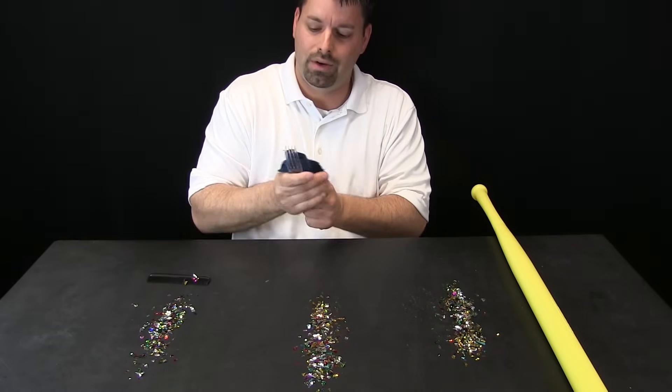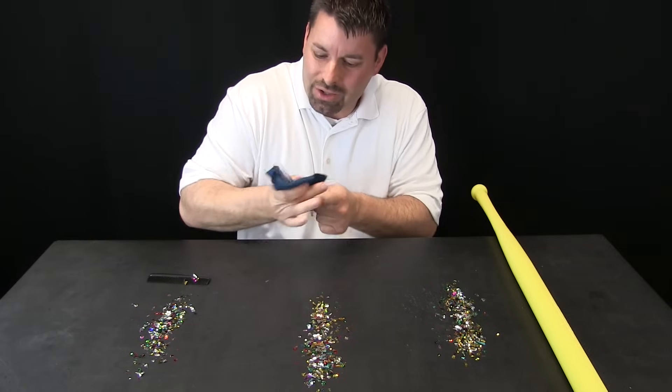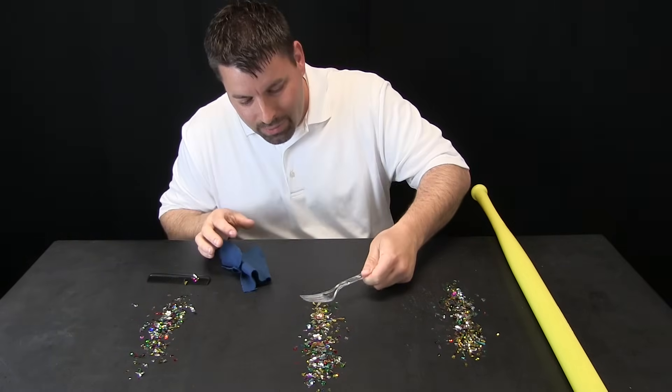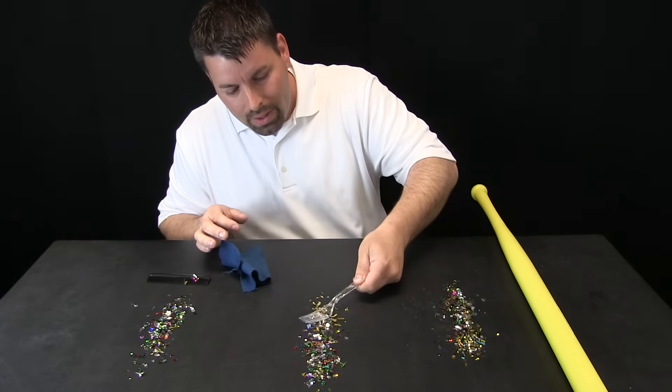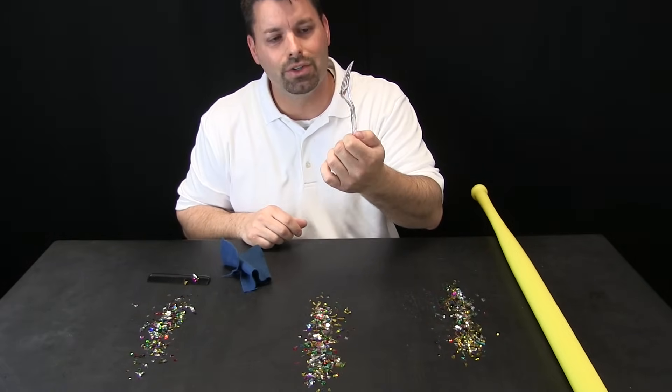Let us try the fork. Charge it up with lots of extra negative charges. Pass the fork over, and you can see a few bits of paper are attracted to the negative charges.